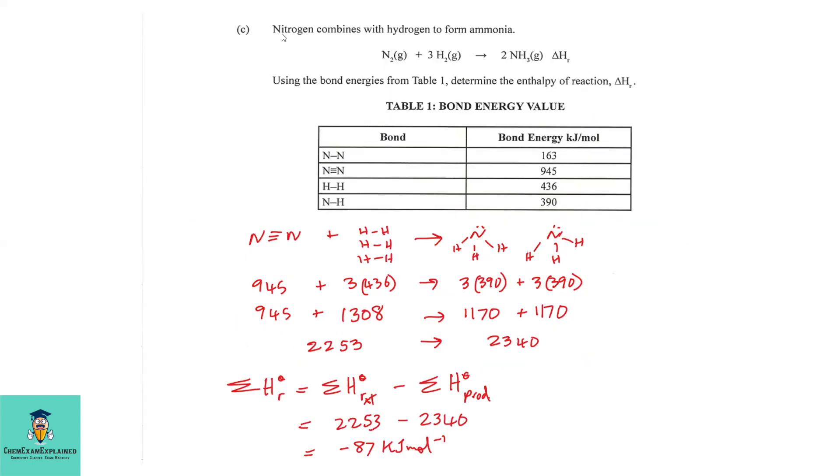Part C. Nitrogen combines with hydrogen to form ammonia. Let's examine the equation: N₂ + 3H₂ produces 2NH₃. Using the bond energies from table one, determine the enthalpy of reaction ΔHᵣ.